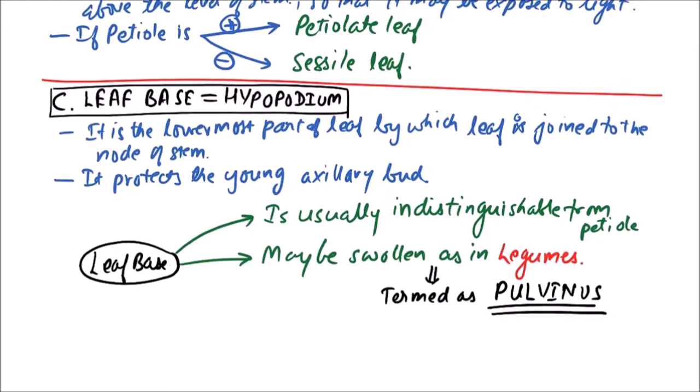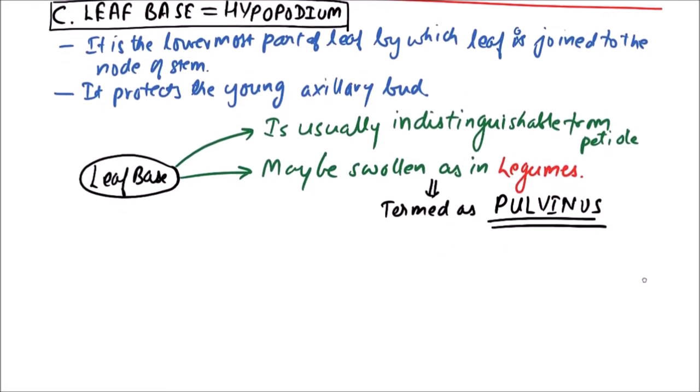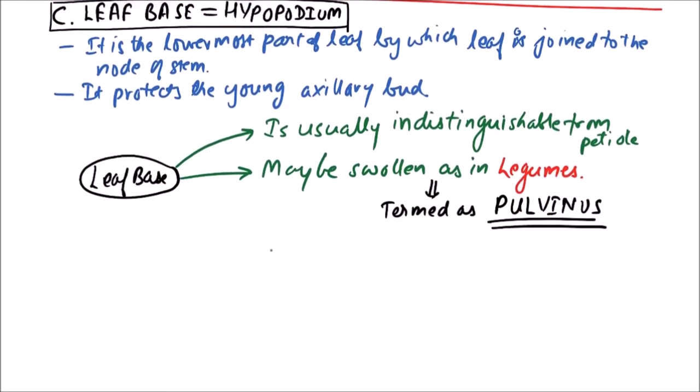If the leaf base is swollen, then it will be termed as pulvinus. There are some differences between the pulvinus and the petiole.